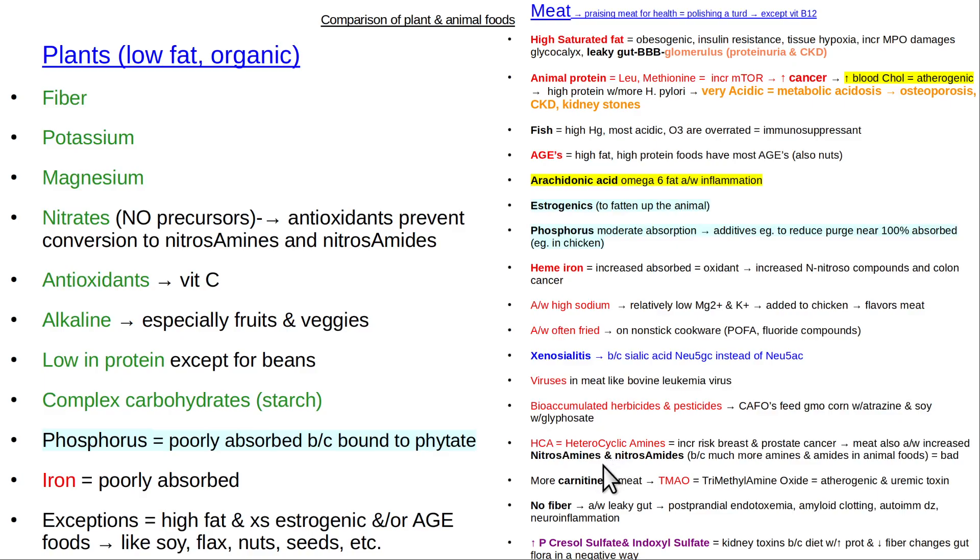They also are related to increased production of heterocyclic amines that are toxic to the body. That increase the risk of breast and prostate cancer. We talked about meat leading to the production of increased nitrosamines and nitrosamides. You'll also produce in the gut because meat changes the gut flora. The lack of dietary fiber and the increase in the amount of protein causes a change in the gut flora, the bacteria, in the colon. And you get increased amounts of tyrosine, for example, converted to something called p-cresyl sulfate. You get increased amounts of tryptophan converted to indoxyl sulfate. And these are both toxic to the kidneys.